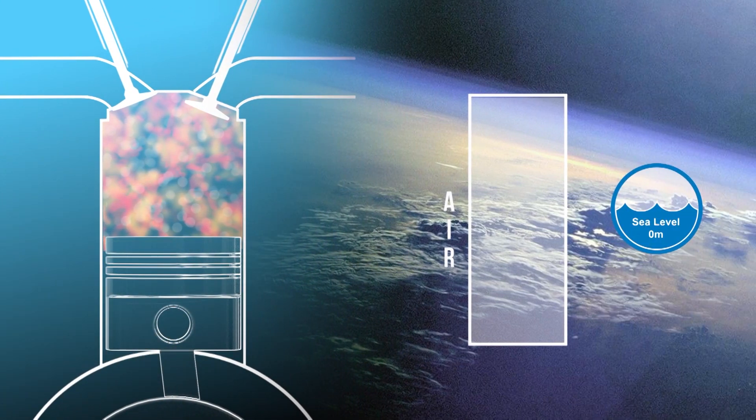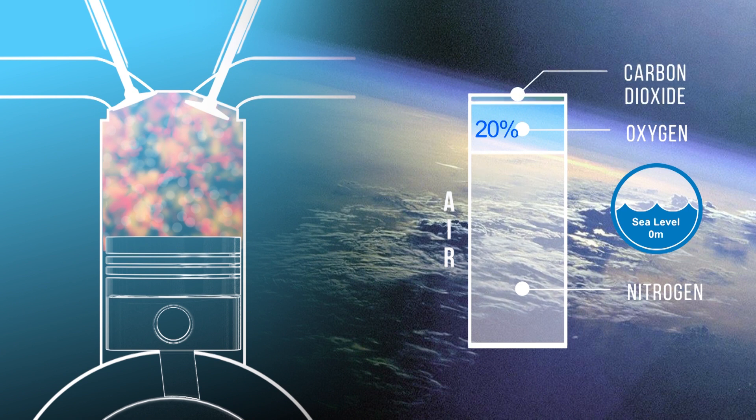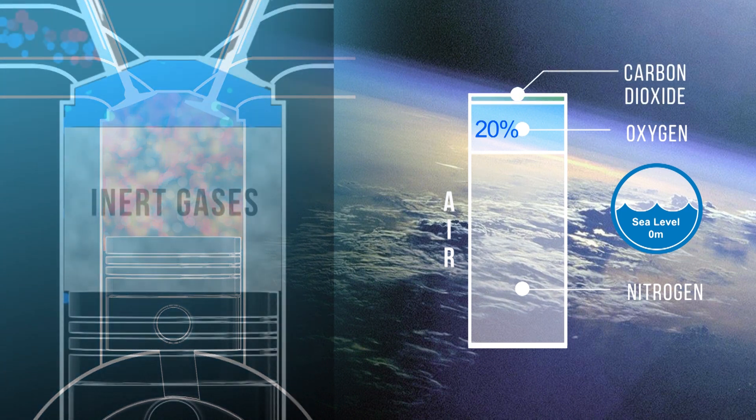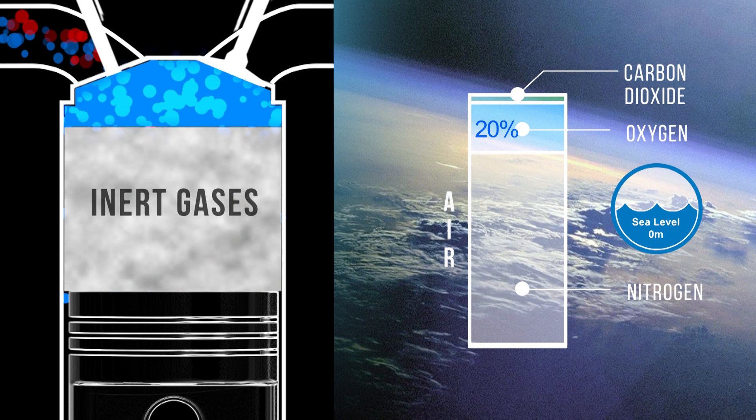But at sea level, the air in our atmosphere only contains about 20% oxygen, with the rest made up from nitrogen, CO2, and other gases. So knowing this, we can see that our engine cylinder only contains a small amount of usable fuel.